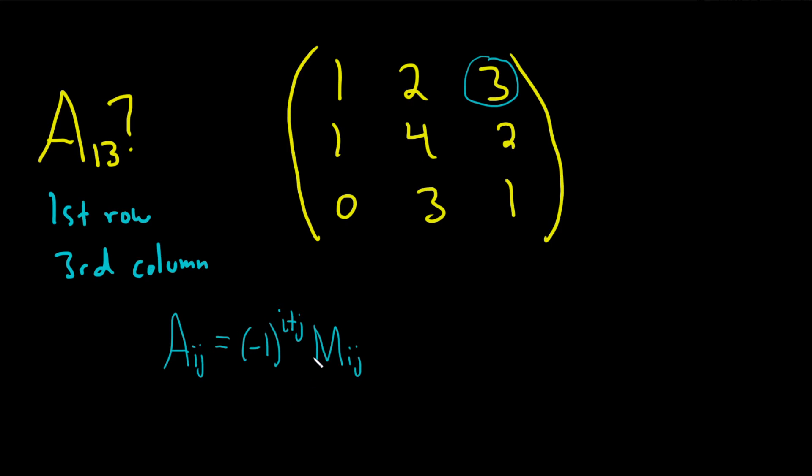It's pretty easy to figure out. I know the formula looks kind of confusing, but it's not. So this is a sub 1, 3, negative 1 to the 1 plus 3.